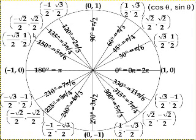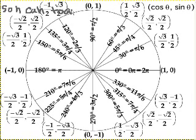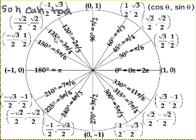As a review, remember what SOH CAH TOA told us. That told us that sine, if we have a right angle, the sine of an angle in the right triangle is equal to the opposite side over the hypotenuse, the cosine of an angle is equal to the adjacent side over the hypotenuse, and the tangent is equal to the opposite over the adjacent side. But if you think about it, what happens when that angle approaches 90 degrees? You can't have two 90 degree angles in a right triangle, or what happens when that angle is greater than 90 degrees, or what if it went negative? And that's why, if you remember from the previous video, we needed the unit circle definition.